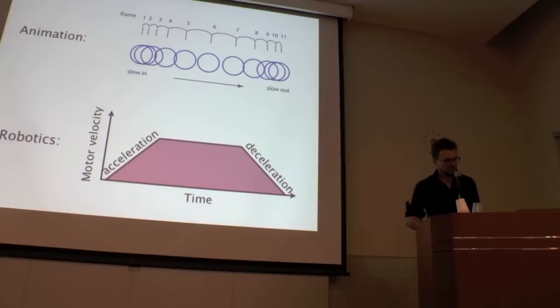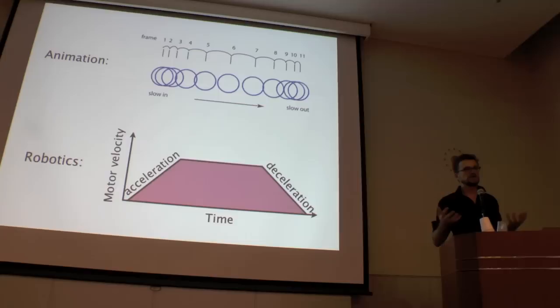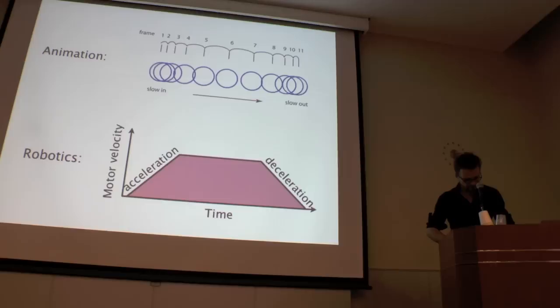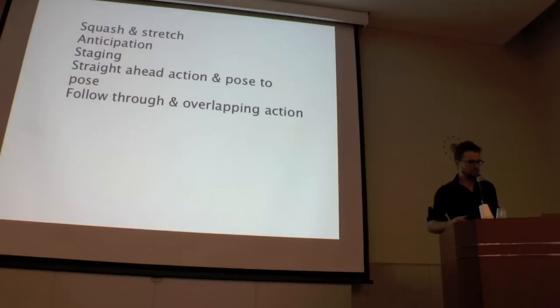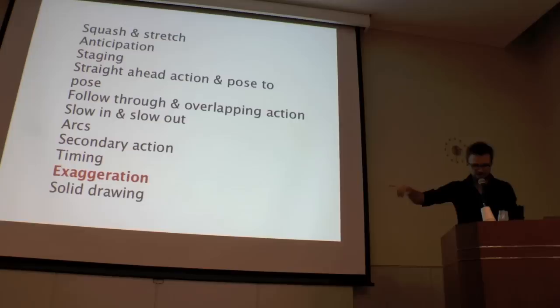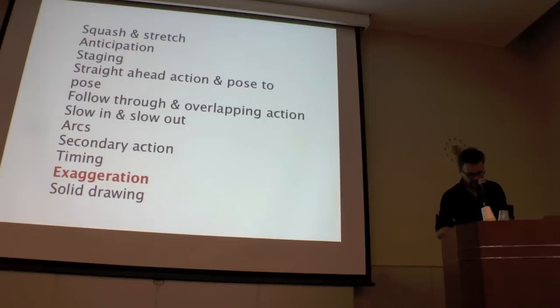Each of these principles, this is slow in and slow out, for example, have a direct applicability in how we control robots and how we drive motors. But in terms of the uncanny valley, I think the most important two principles are exaggeration and, it didn't show, it went below, but appeal.